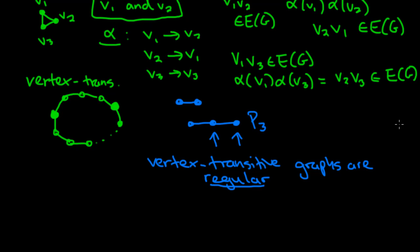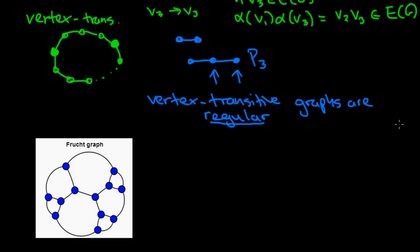But don't be fooled, just because a graph is regular does not make it vertex transitive. And here's a nice little example, which I took from Wikipedia. It's called the Frucht graph. We can easily see that this graph is three regular, but it is not vertex transitive.